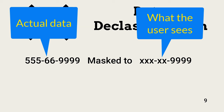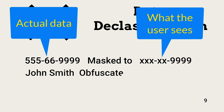Obfuscating information enables employees to see information for analysis or other purposes that does not provide what is needed to uniquely identify each customer or other individuals related to the analyzed records.